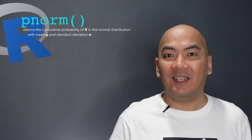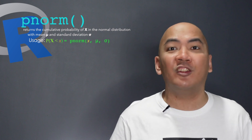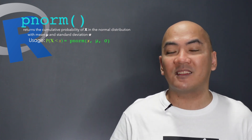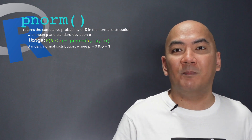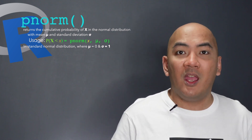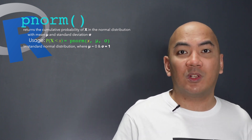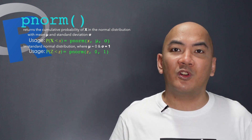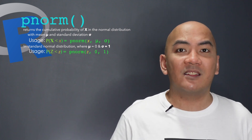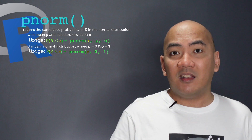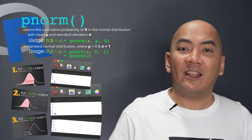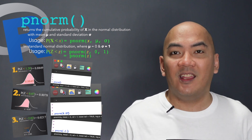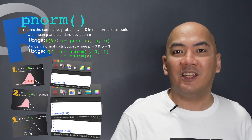The pnorm function in R returns the cumulative probability of random variable X in the normal distribution with mean mu and standard deviation sigma. For a standard normal distribution with mean mu equal to 0 and standard deviation sigma equal to 1, you may use pnorm(z, 0, 1), or simply pnorm(z), and that returns the cumulative probability of Z.